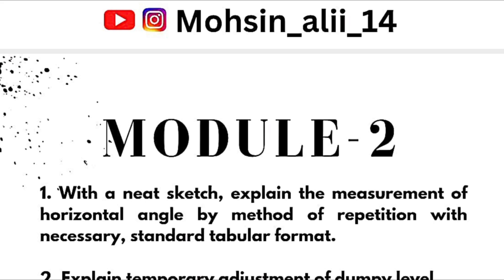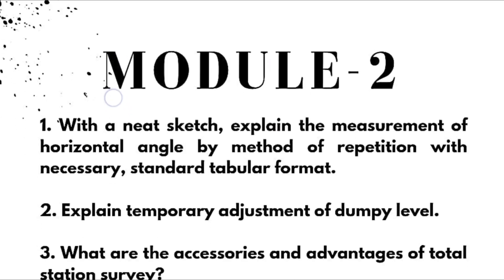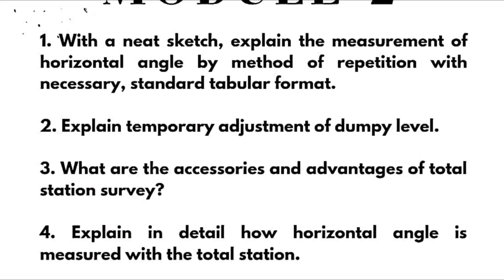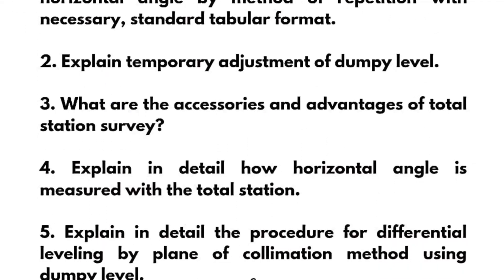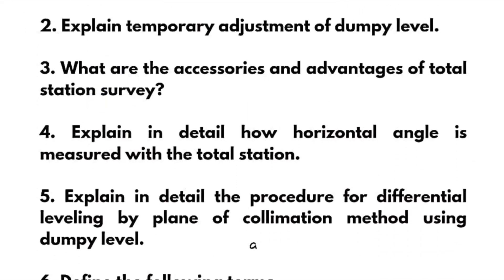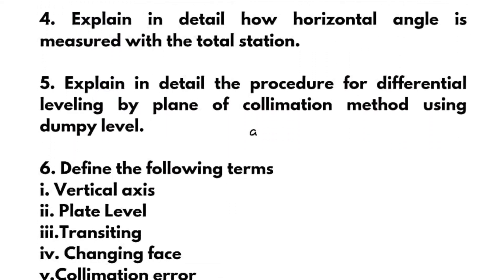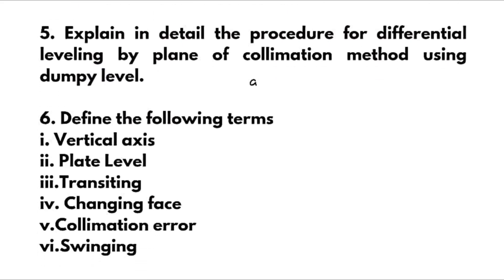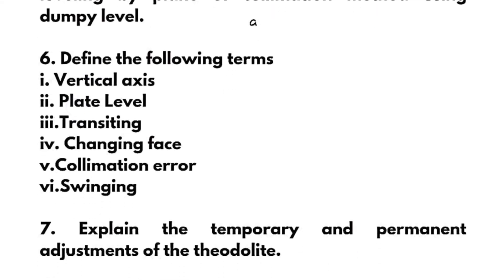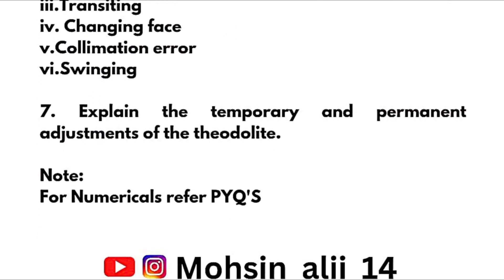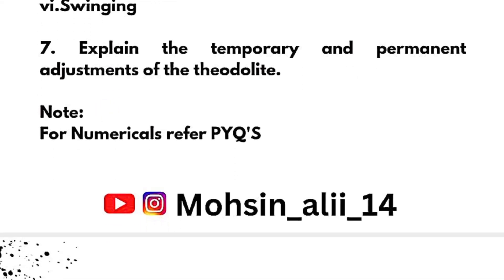Module 2 is a combination of numerical and theoretical portions. For numericals, refer to previous year question papers and model question papers. The theoretical portions for Module 2 include: Explain the measurement of horizontal angle by method of repetition with neat sketch and standard tabular format. Explain temporary adjustment of dumpy level. What are the accessories and advantages of total station survey? Explain how horizontal angle is measured with total station. Explain differential leveling by plane of collimation method using dumpy level. Define the terms: vertical axis, plate level, transiting, change phase, collimation error, and swinging. Explain temporary and permanent adjustments of the theodolite.